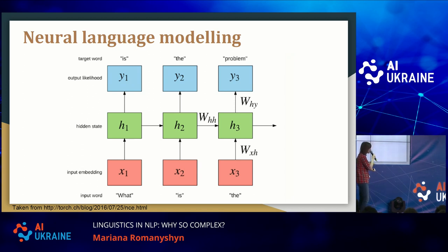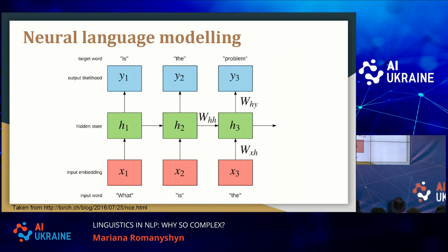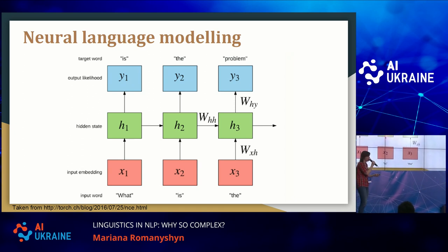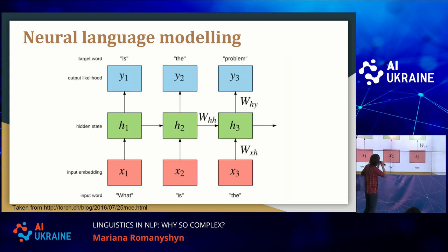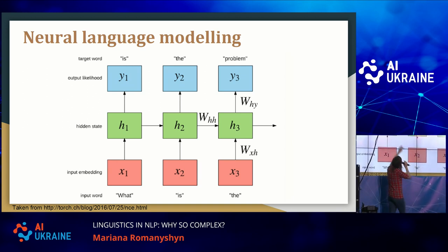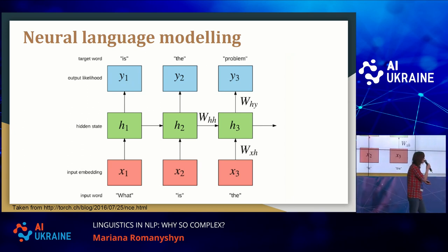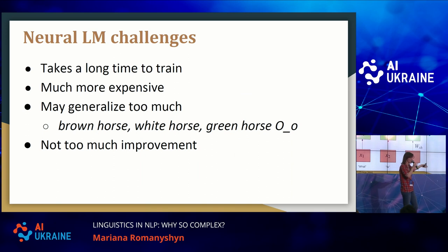There are also neural language models, which are state of the art right now. An example would be a recurrent neural network that maximizes the probability of the next word. Words come in as embeddings to a hidden layer, and the output is a probability distribution over each word in the vocabulary. When training the model, you maximize the probability that the target word has the highest probability in the output. When estimating the probability of a sentence, you input words one by one, see the probability of the next word in the output layer, and multiply these probabilities.